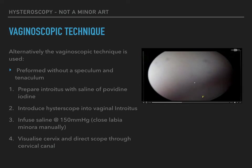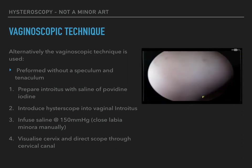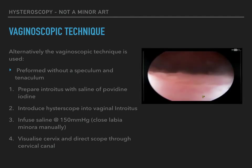The vaginoscopic or no-touch technique is performed without a speculum or tenaculum and without anesthesia. Women with cervical stenosis are not candidates for this approach. To perform the vaginoscopic technique, perform a bimanual pelvic examination with the patient in the dorsal lithotomy position. Prepare the vaginal introitus with saline or povidine-iodine. Without using a speculum, introduce a rigid or semi-rigid narrow-caliber hysteroscope into the vaginal introitus. Infuse normal saline at a pressure of 150 mmHg, closing the labia minora manually if needed to contain the distending medium. Visualize the cervix and direct the hysteroscope through the cervical canal into the uterine cavity.